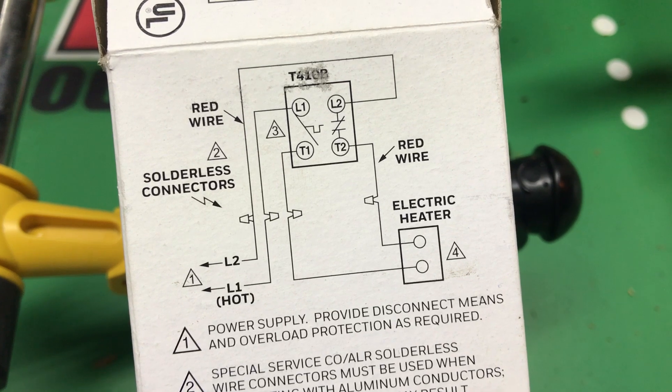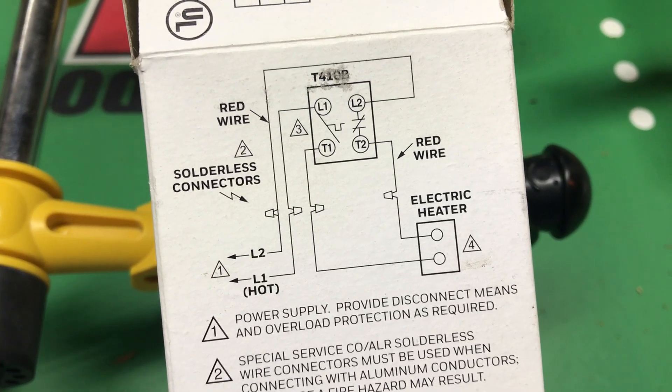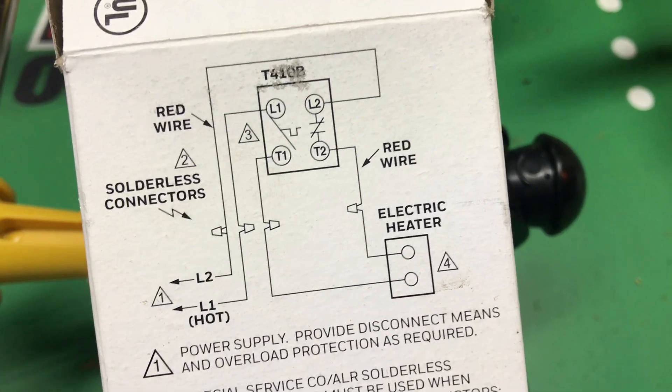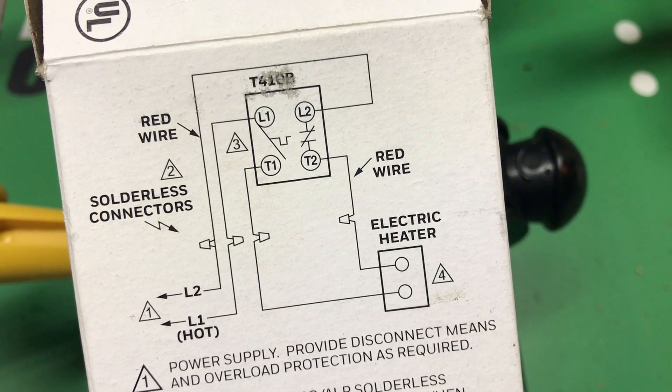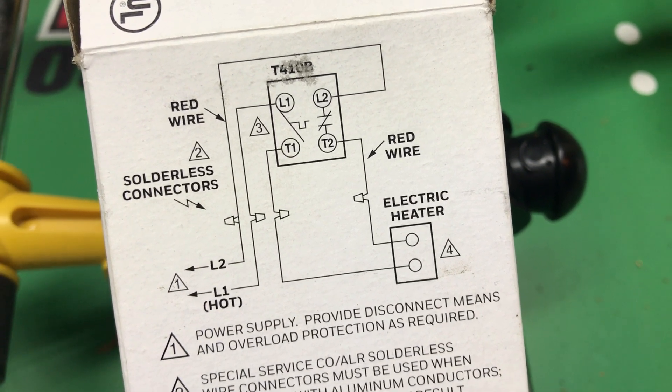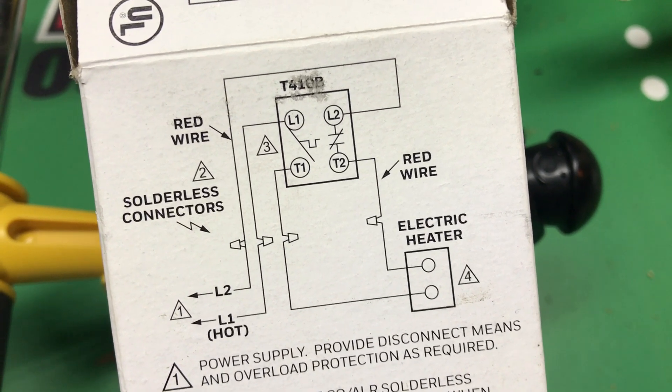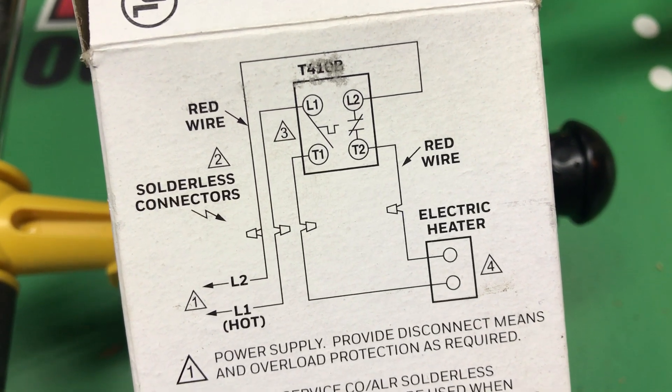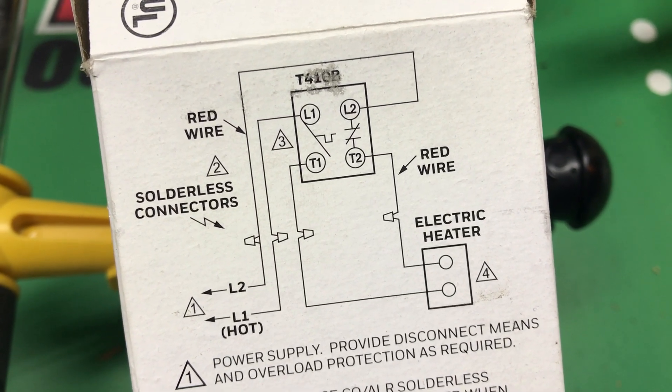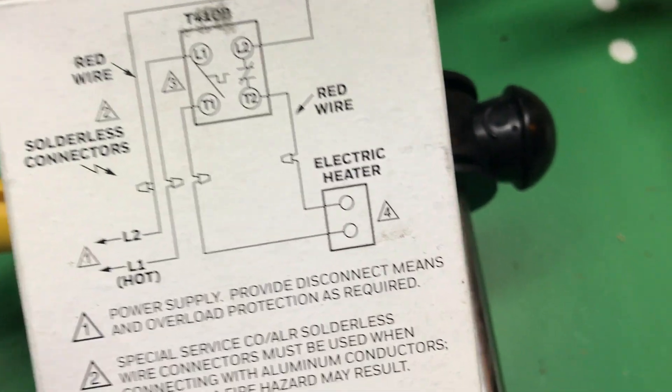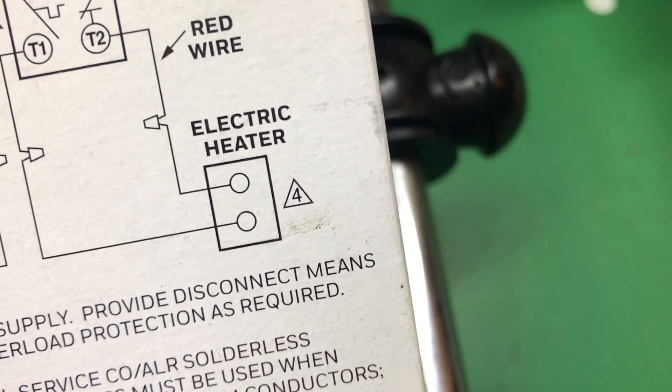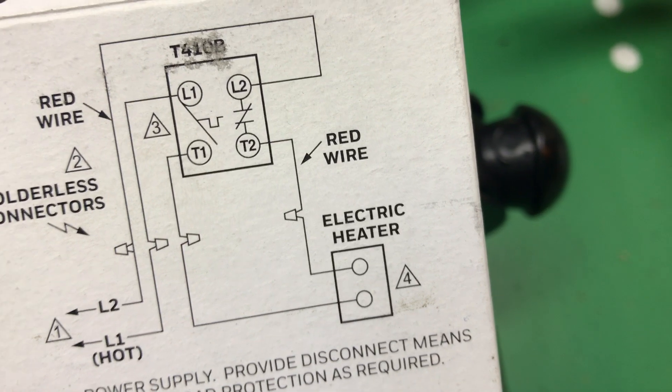We have load one and load two coming into the top of it. We can look at the back—this is the top—and then going out with T1 and T2 to the electric heater right down here. Now let's look at the actual wiring.